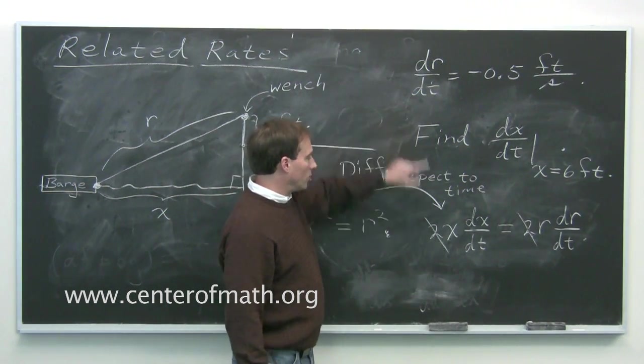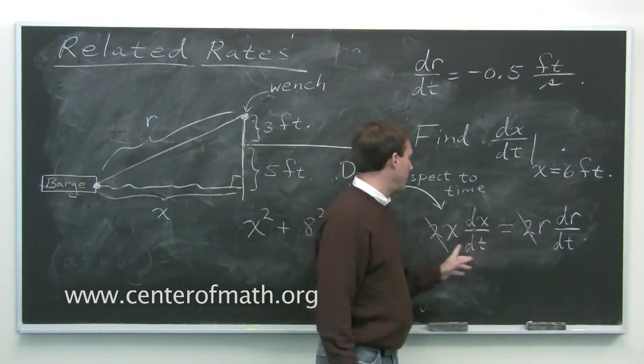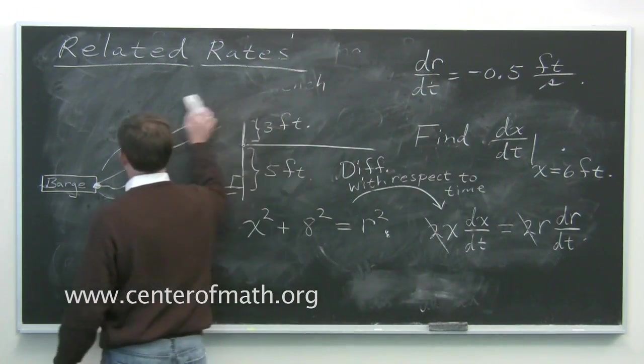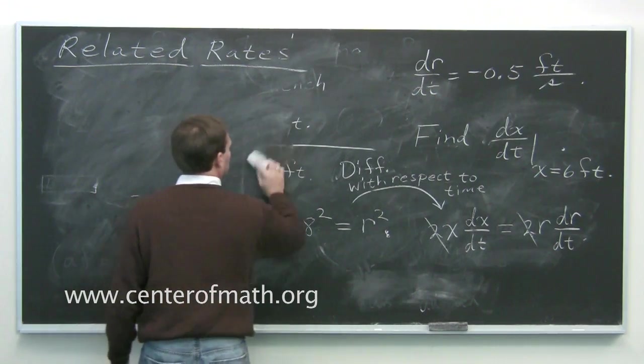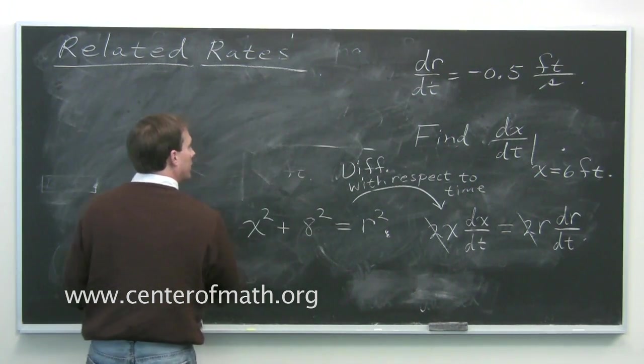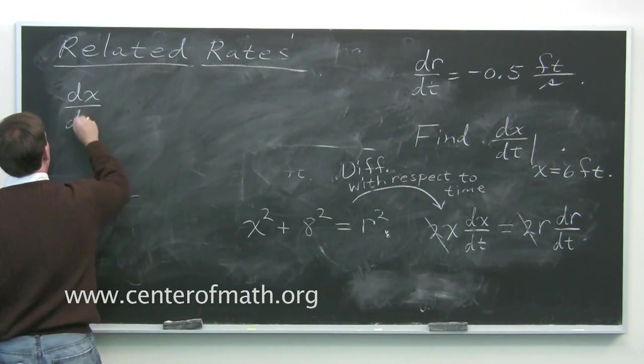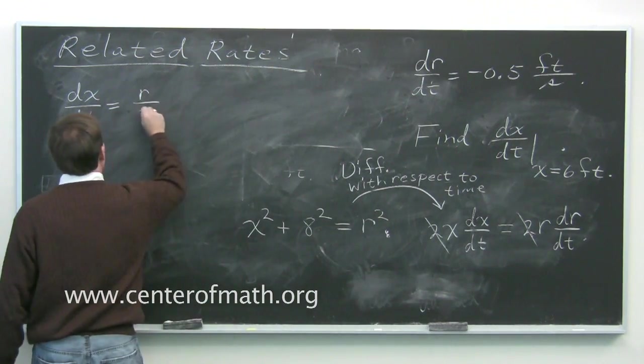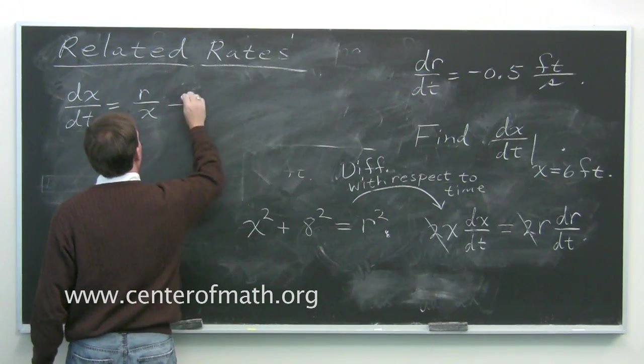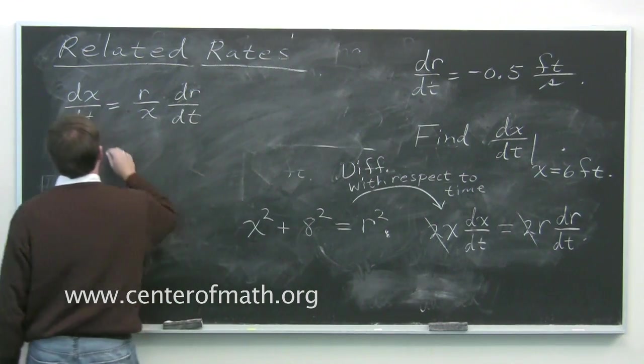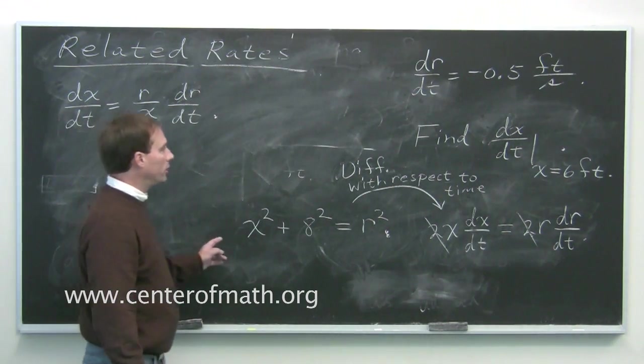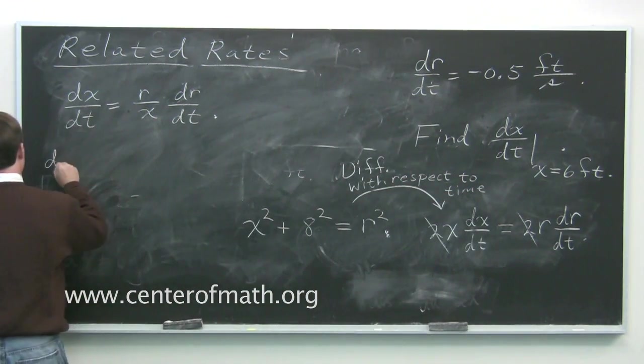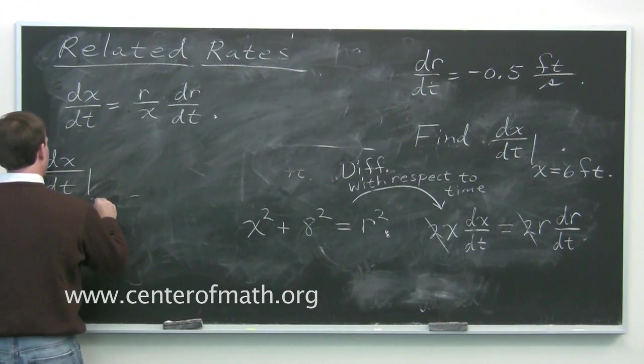We're given dr/dt. We want dx/dt. We need to know r and x at the time that we care about. But we don't need this picture anymore. You get dx/dt, the quantity that we're after, is just divide by x. You get r over x times dr/dt. This is true at all times. We want this when x is 6 feet. So what we'd like to know is what's dx/dt when x is 6 feet.